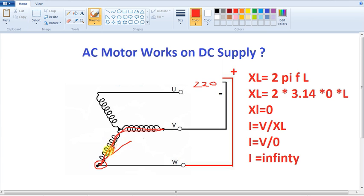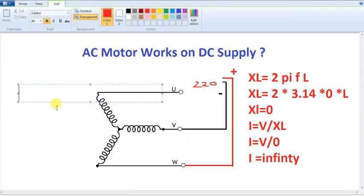Current will flow and burn the coil. So this is the first proof method. Second is how to prove it. Inductor formula is very basic.